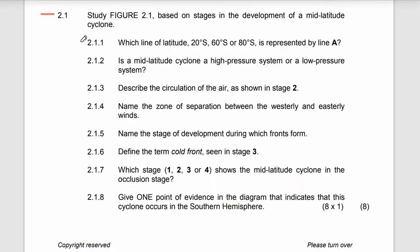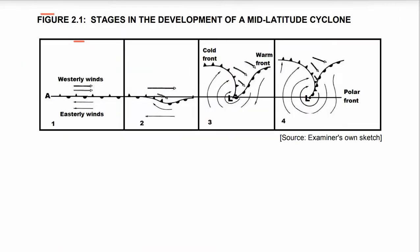Our very first question is 2.1.1: which line of latitude — 20 degrees south, 50 degrees south, or 80 degrees south of the equator — is represented by line A? Let's go and check line A. We have 20 degrees south, 60 degrees south, and 80 degrees south.